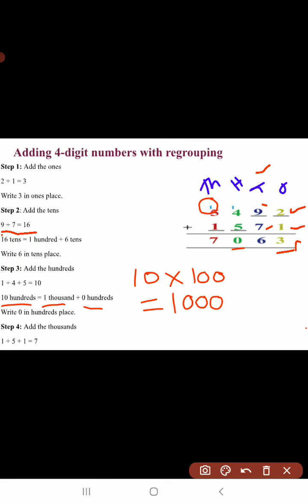Now, add these 3 numbers. 5 plus 1, 6. 6 plus 1, 7. So, write 7 in the 1000's place.